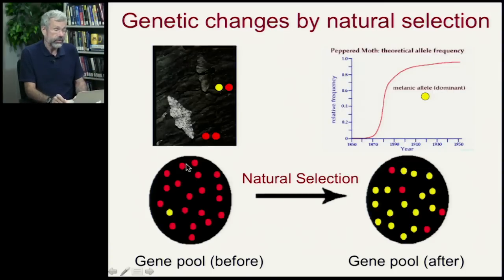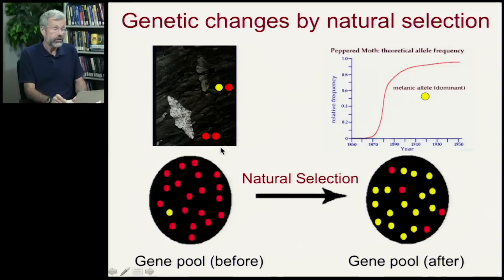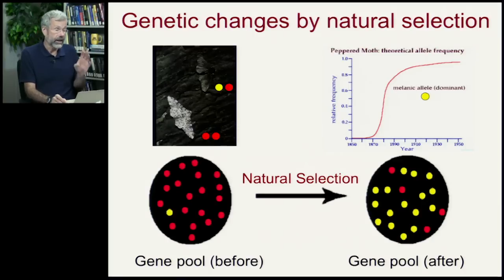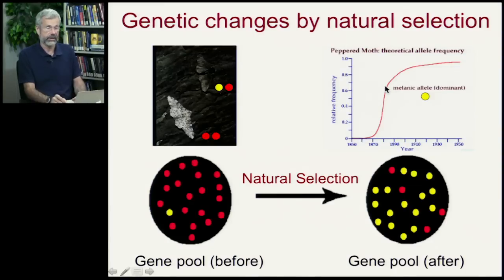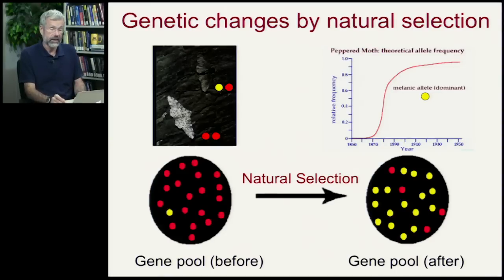We also saw this with the example of Biston betularia, the speckled moth. The typical genotype produces white coloration with occasional speckles, camouflaged against lichens on trees. But then a dominant mutation causes melanism — the moth is black — and this black form is now camouflaged against the sooty background of polluted tree trunks and buildings. There is tremendous selection pressure because predators won't eat individuals possessing that favorable allele, so industrial melanism became very common in England by the end of the 19th century.